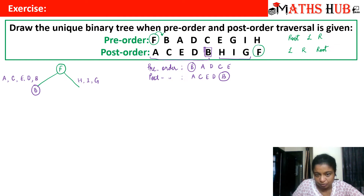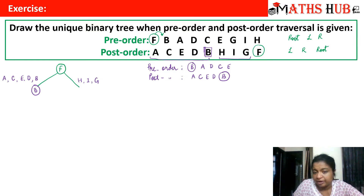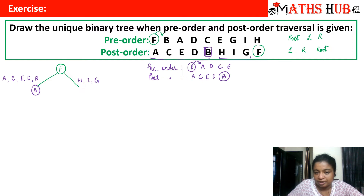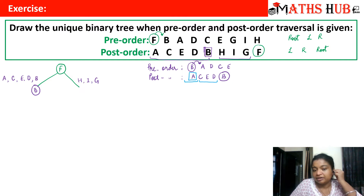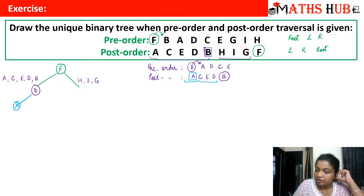So vertex B will act as the root in the left subtree after F. Now we check which vertices go into B's left and right subtrees using the same method. In the pre-order, the immediate successor of B is A. Locate A in the post-order — all vertices up to and including A are in the left subtree, so only vertex A is on the left. The vertices C, E, and D are in the right subtree.